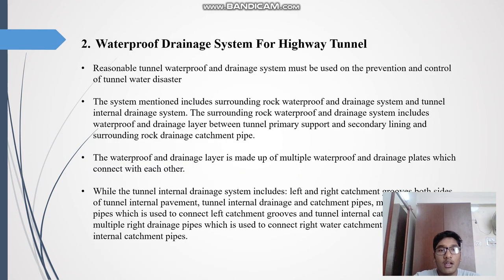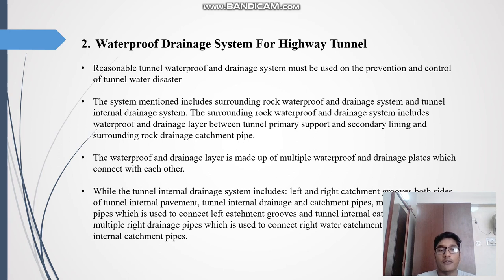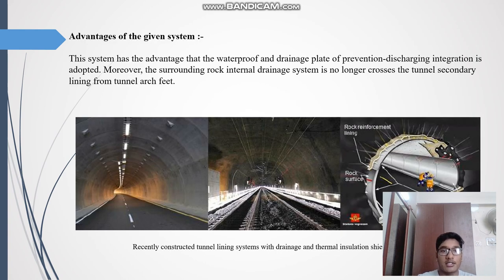Now coming to the second topic: a waterproof drainage system for highway tunnels. This is a very important topic because all highways have tunnels, and a reasonable tunnel waterproof and drainage system must be used for the prevention and control of tunnel water disasters. The system includes the surrounding rock waterproof and drainage system and the tunnel internal data system. The waterproof and drainage layer is made up of multiple waterproof and drainage plates which connect with each other, while the tunnel internal system includes left and right catchment groups, tunnel internal pavement, internal drainage and catchment pipes, and multiple left and right drainage pipes connecting the catchment groups. An advantage of this system is that the waterproof and drainage plate of prevention-discharging integration is adopted, and the surrounding rock internal drainage system no longer crosses the tunnel secondary lining.